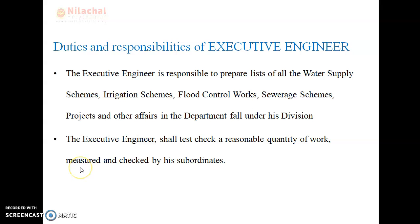Now we discuss about the duties and responsibilities of the executive engineer. The executive engineer is responsible to prepare a list of all water supply schemes, irrigation schemes, flood control works, sewer schemes, projects and other affairs in the department falling under his division. This includes listing any types of new irrigation schemes, water supply schemes needed for the people, how to control floods, how to construct bridges, and how to construct culverts at the site of river to control the flow of water.